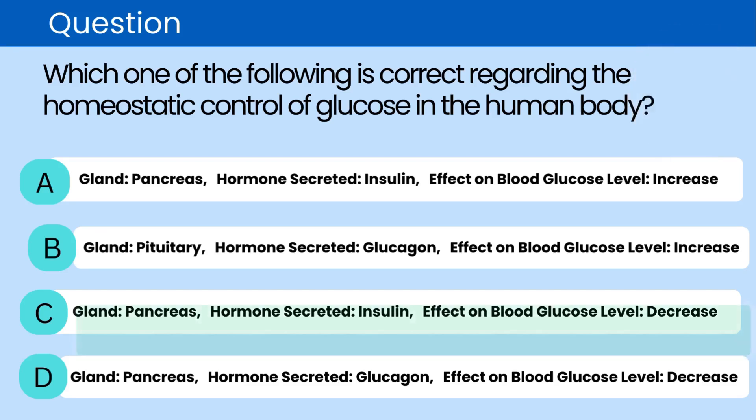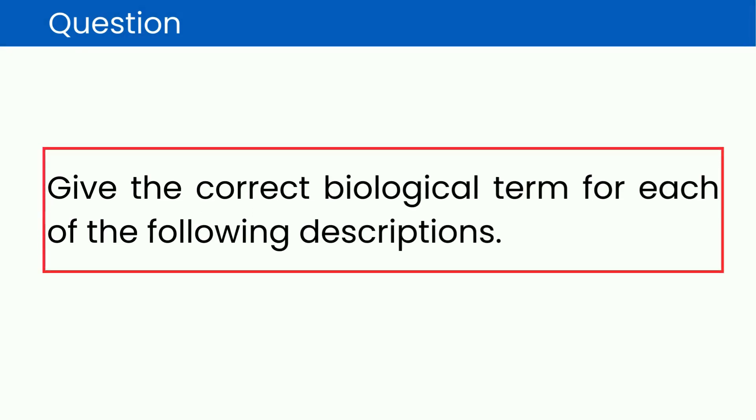The correct answer is C. Insulin, secreted by the pancreas, decreases blood glucose levels by facilitating the uptake of glucose into cells for storage or energy use. Give the correct biological term for each of the following descriptions.